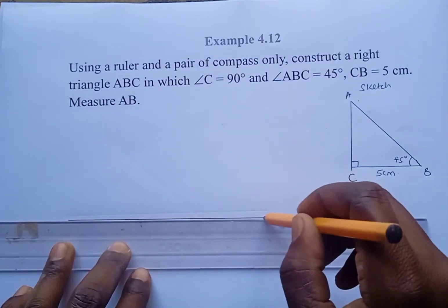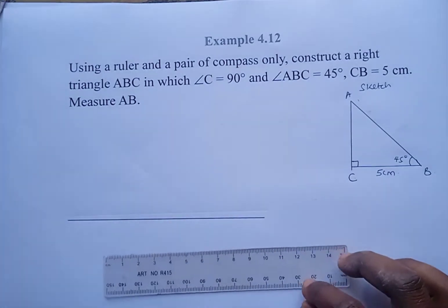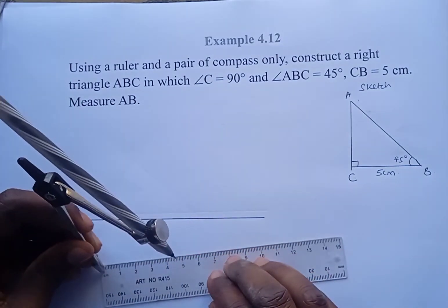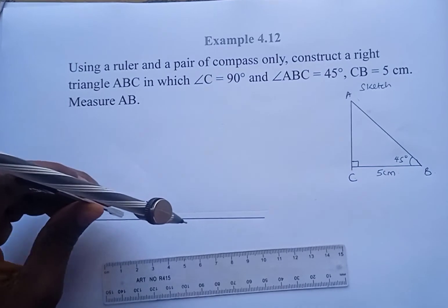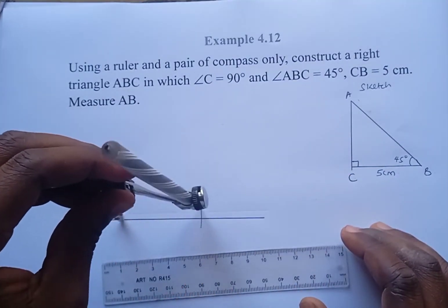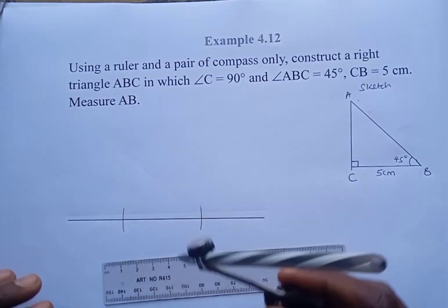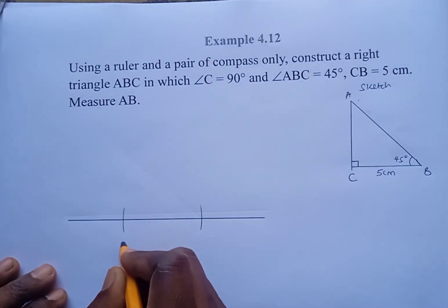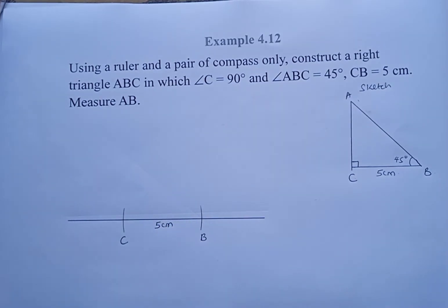We draw the line CB which is 5 centimeters. So we measure 5 centimeters from the ruler and then we make the line CB. That is CB, 5 centimeters.